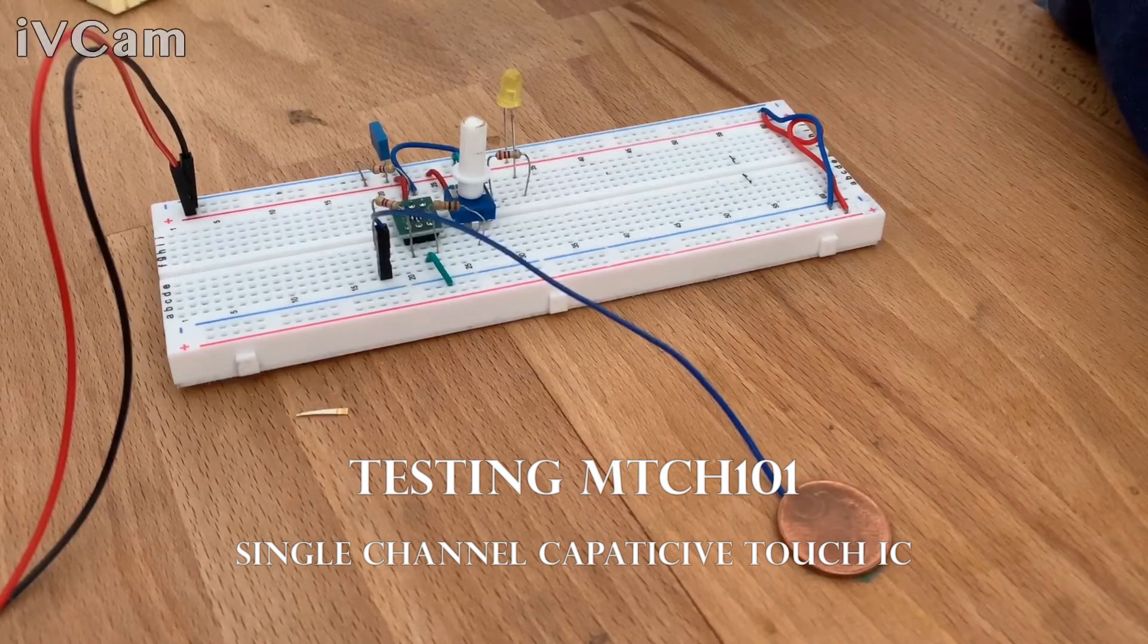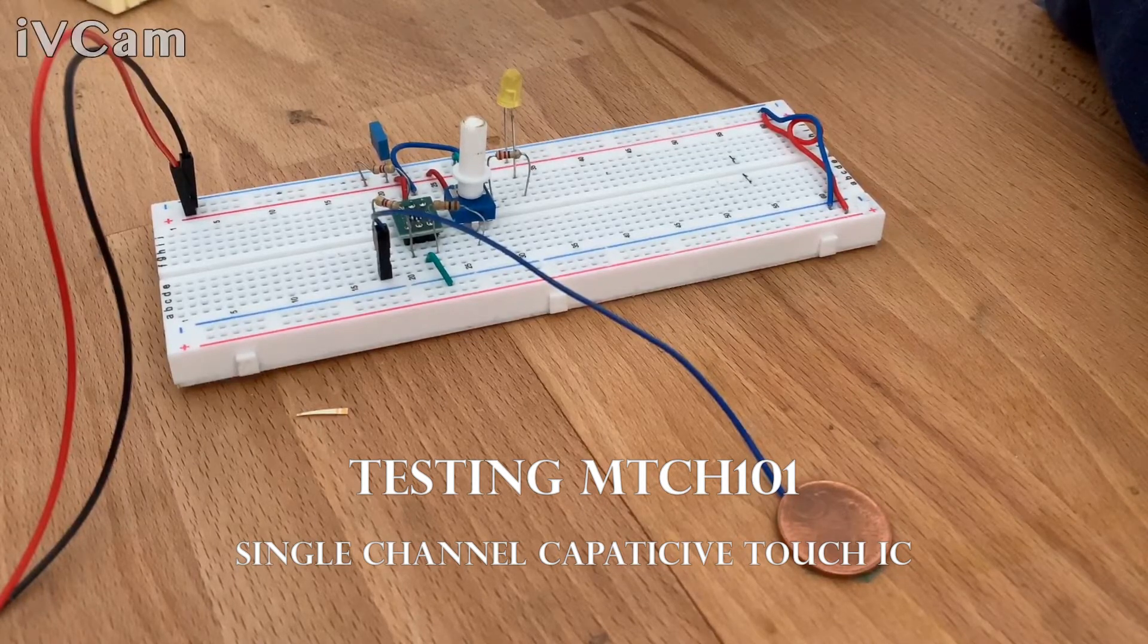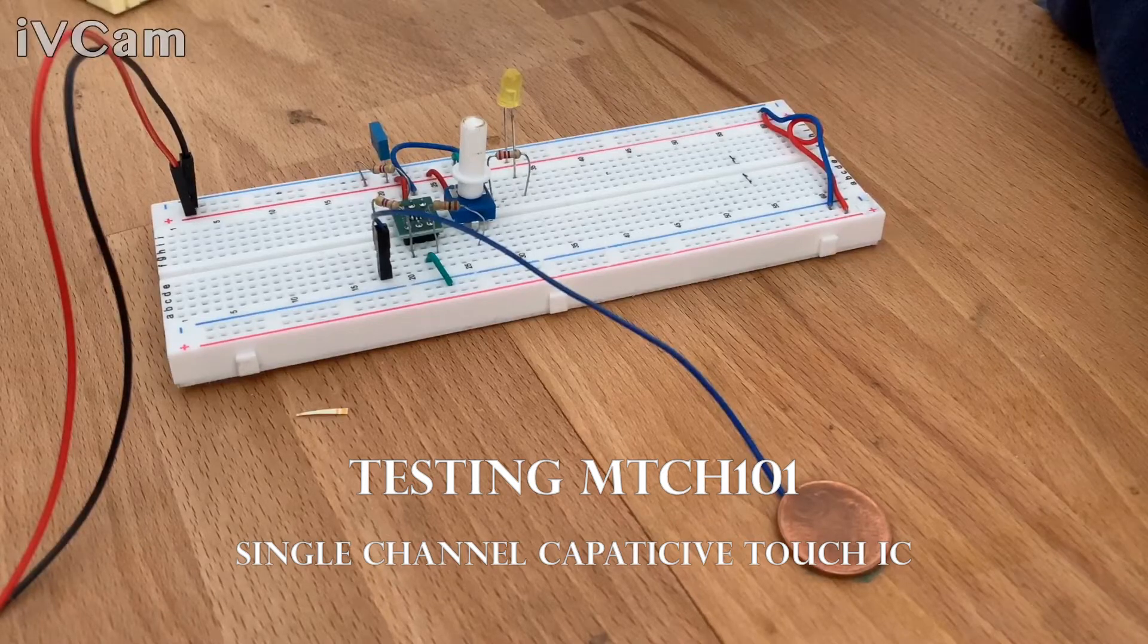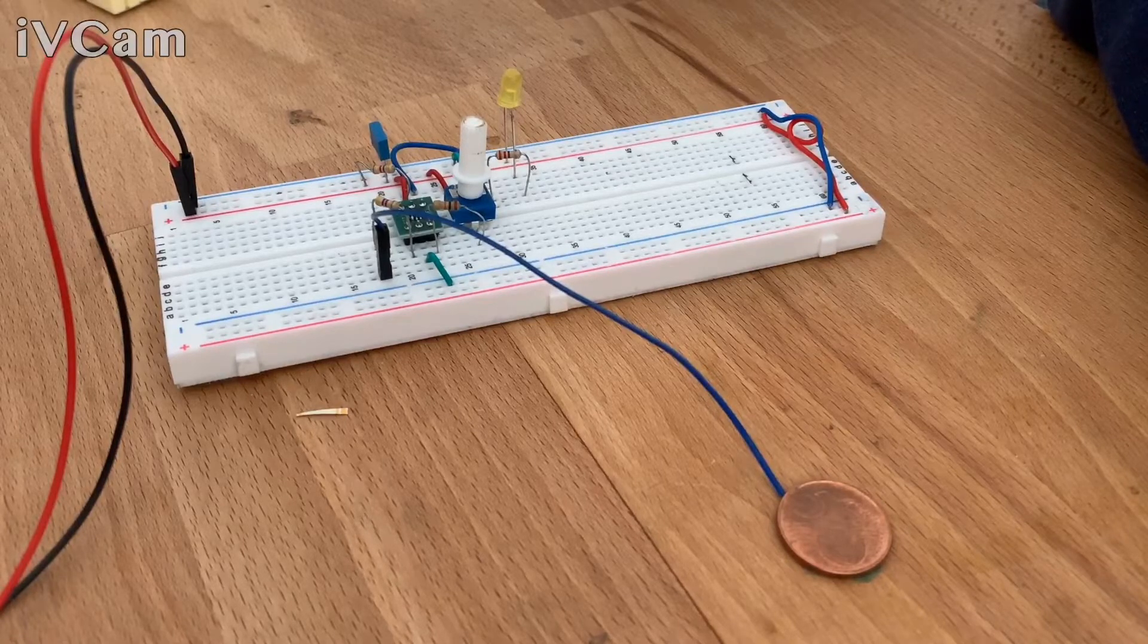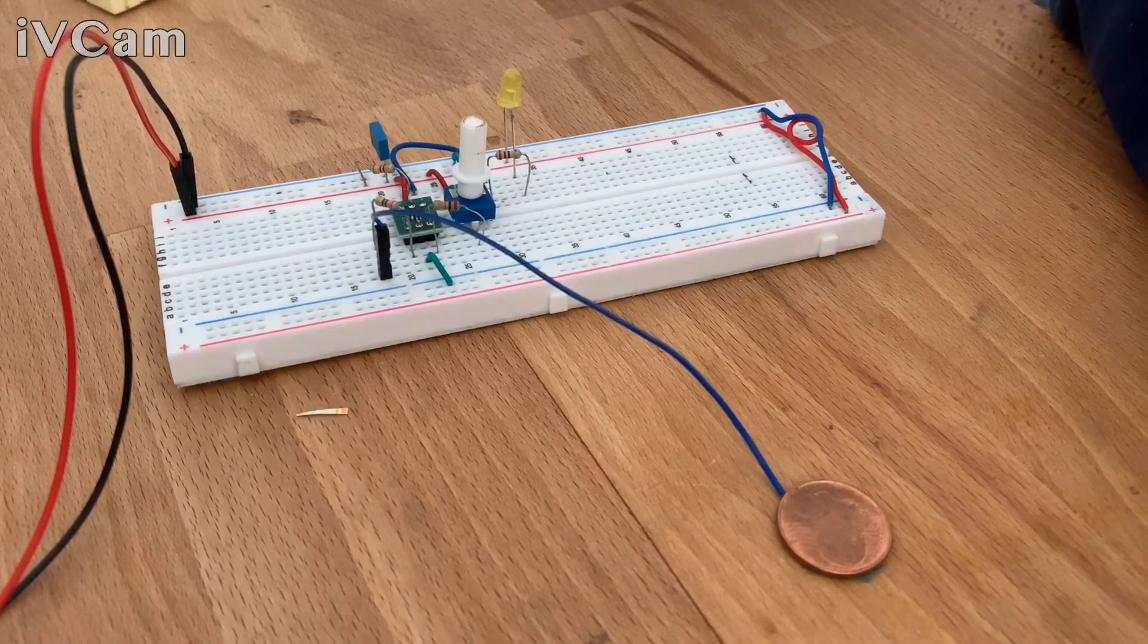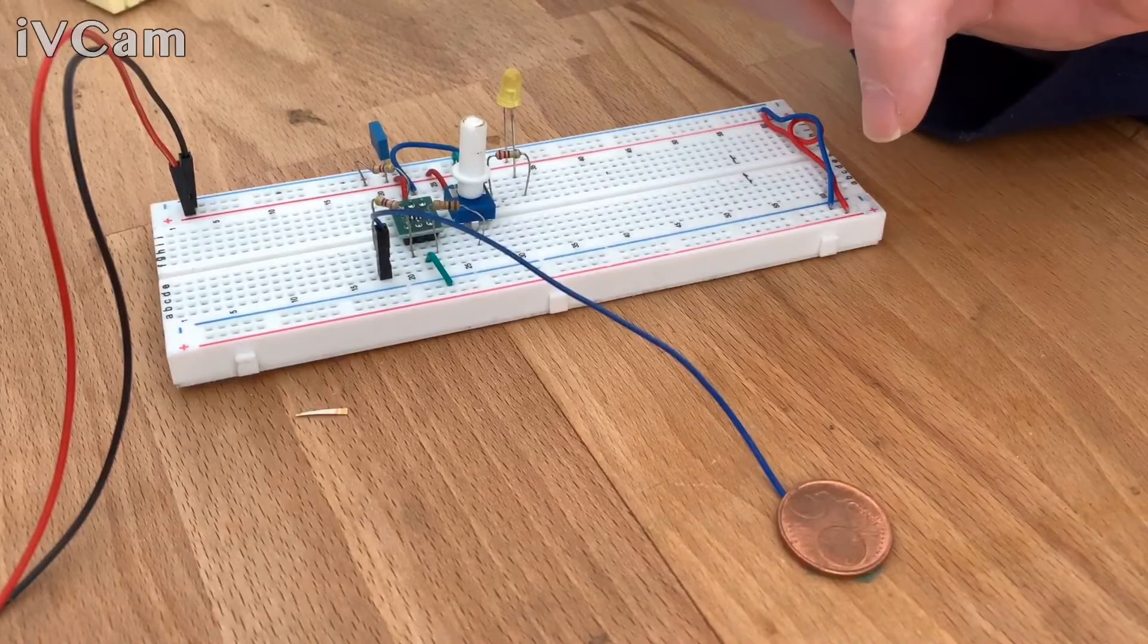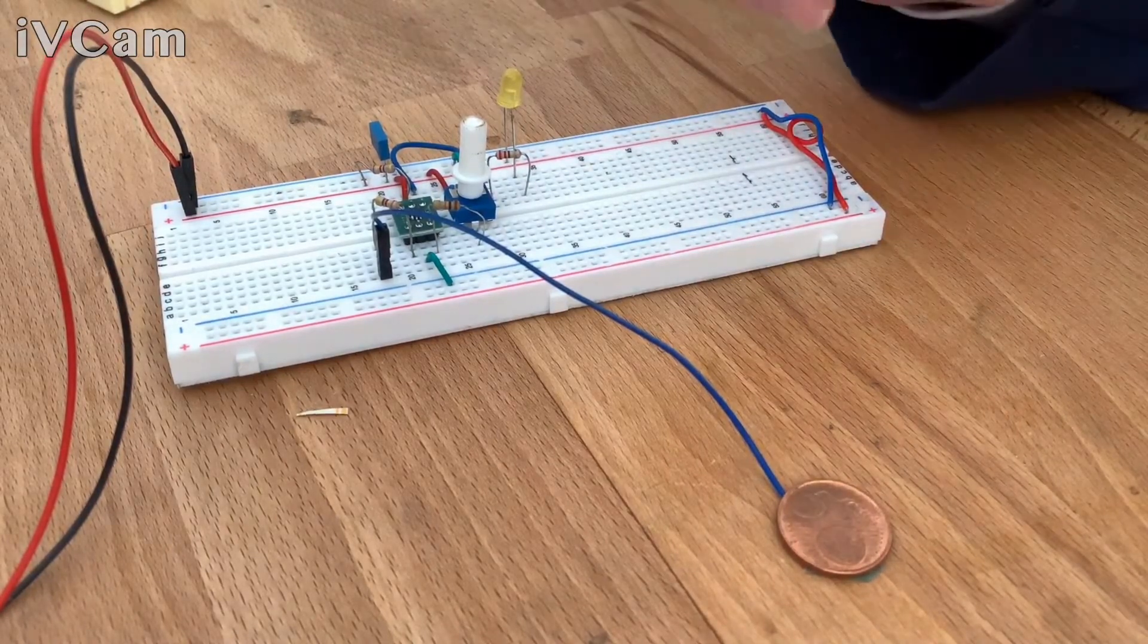Hello, I'm making this video to show the test circuit that I set up to check the MTCH-101 capacitive touch IC from Microchip. I really found very interesting the experimentation with this IC because it's quite easy to use. It can be used absolutely as standalone, as we will see in a moment. So starting describing the circuits, I have followed the typical circuit that is suggested in the data sheet, so it's really nothing fancy.